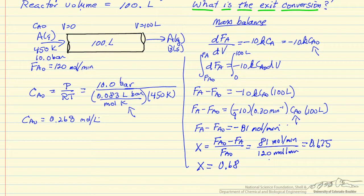And we get a conversion of 0.675. We often write conversion percent, round to two significant figures, 68 percent conversion of the feed reactant A.